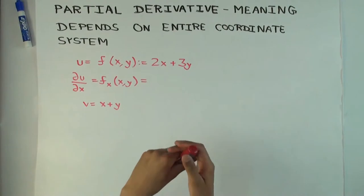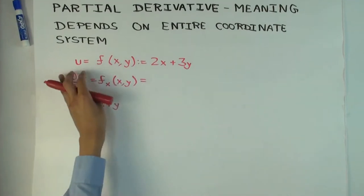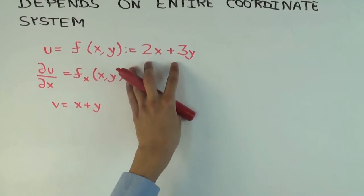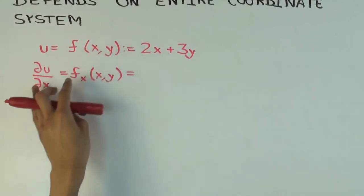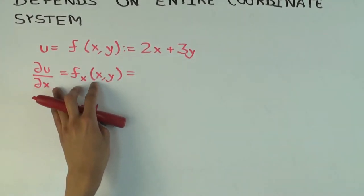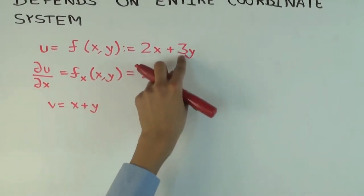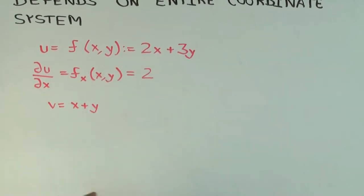So let me do one example and then I'll explain what I mean. So here is a function u, it's a linear function of two variables, it's 2x plus 3y, and I'm asking for the partial derivative of u with respect to x holding y constant. So what's that? 2, because this part differentiates to 0 and this differentiates to 2.